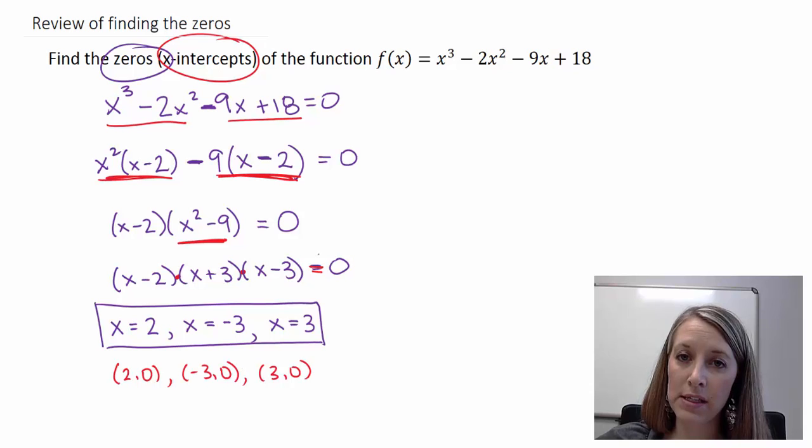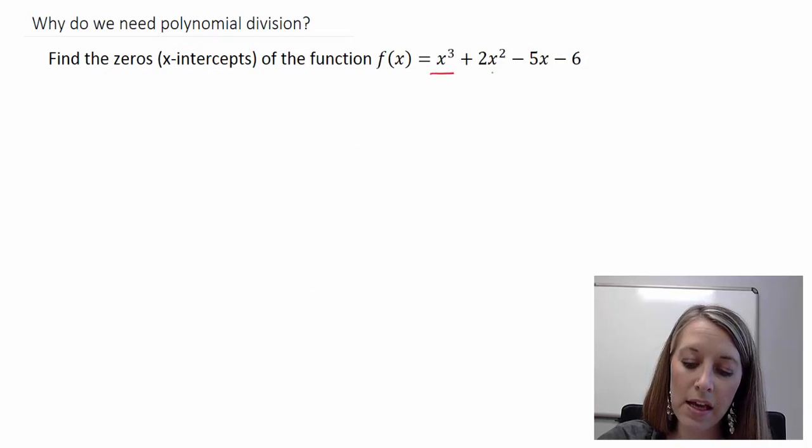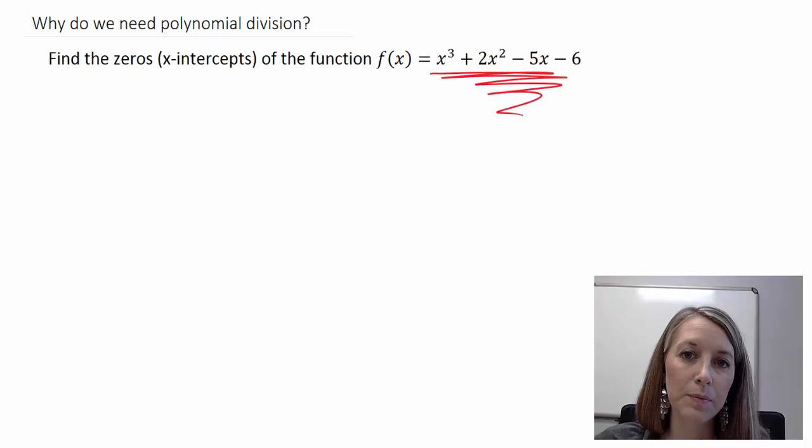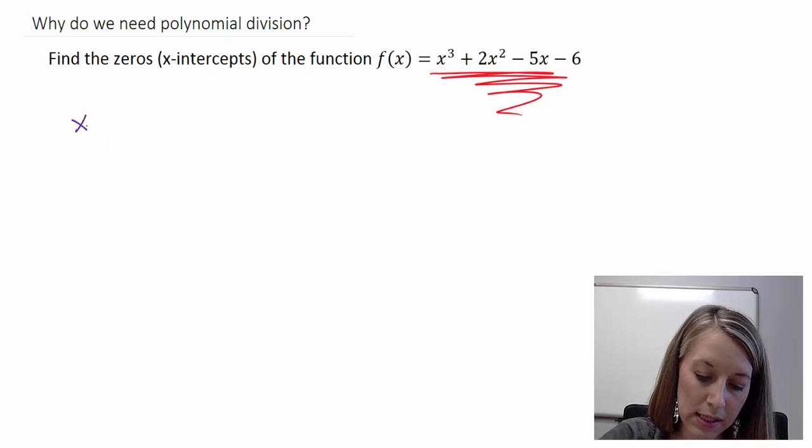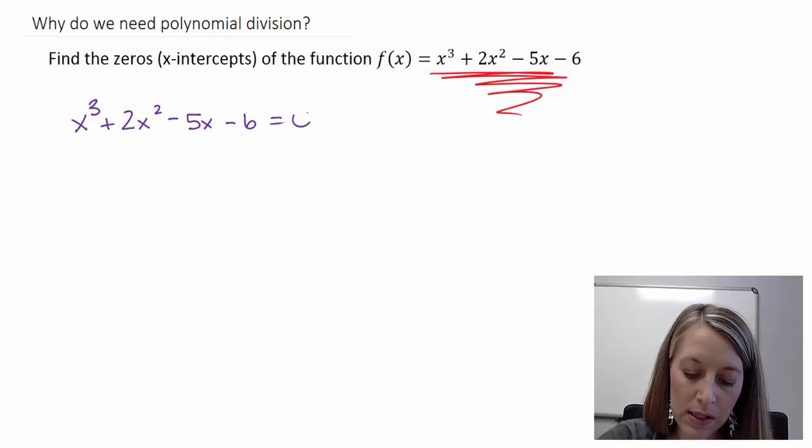Now if we wanted to utilize this, we could go ahead and graph these points and move on with other steps of graphing the polynomial functions. Now that we've done this, let's go ahead and move to my second example, which looks almost exactly the same, except for my function is just different. Again, we're trying to find the zeros or trying to find the x-intercepts of this function. So what we do is the same method. We just take our equation, our function, and we set it equal to zero.